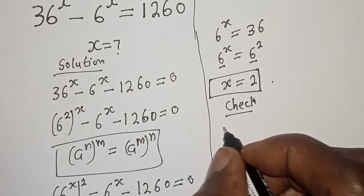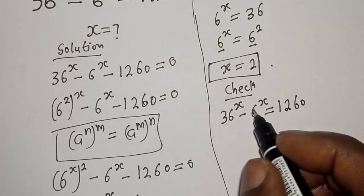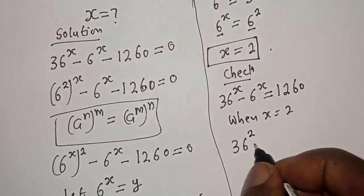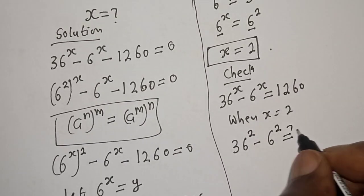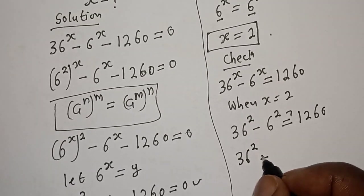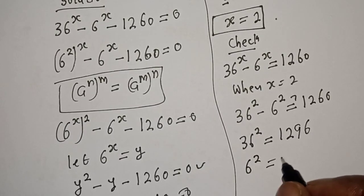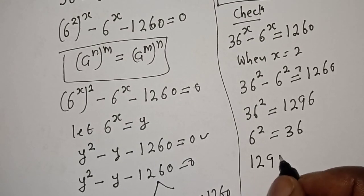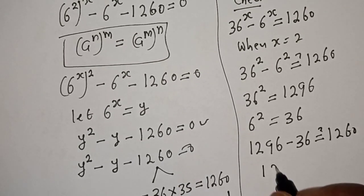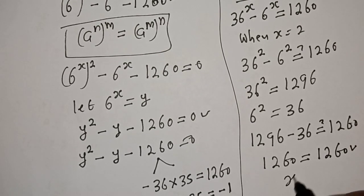We have the given equation: 36 raised to power s minus 6 raised to power s equals 1260. When s equals 2, we have 36 squared minus 6 squared, which must equal 1260. 36 squared is 1296 and 6 squared is 36. So 1296 minus 36 equals 1260, which equals 1260. This satisfies the given equation at s equals 2.